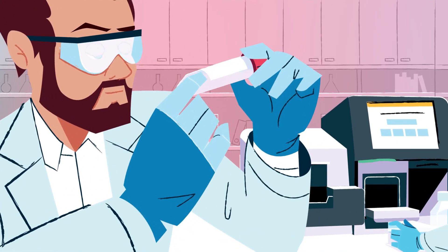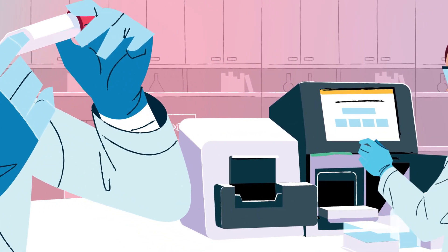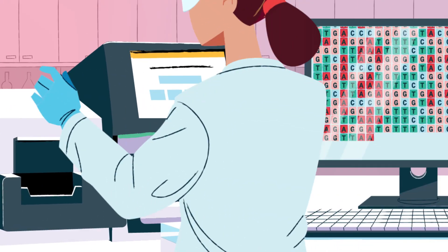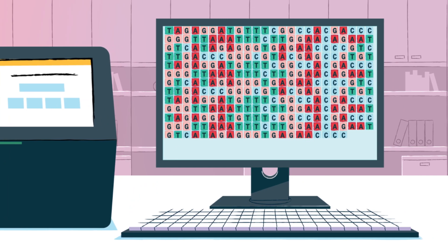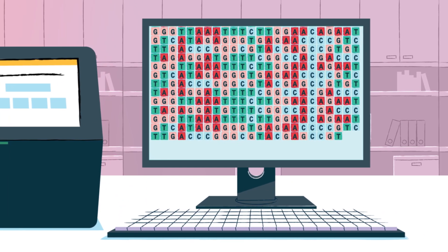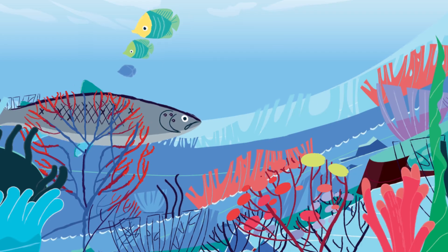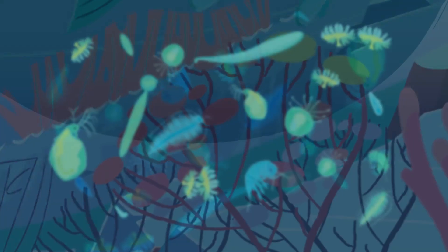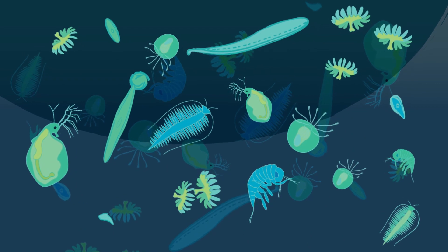Using Next Generation Sequencing, or NGS, we can detect thousands of species simultaneously from a single sample. By studying them we are able to get a snapshot of the ecosystem that exists there, from the larger visible animals right down to the invisible world of phytoplankton and other microscopic creatures.